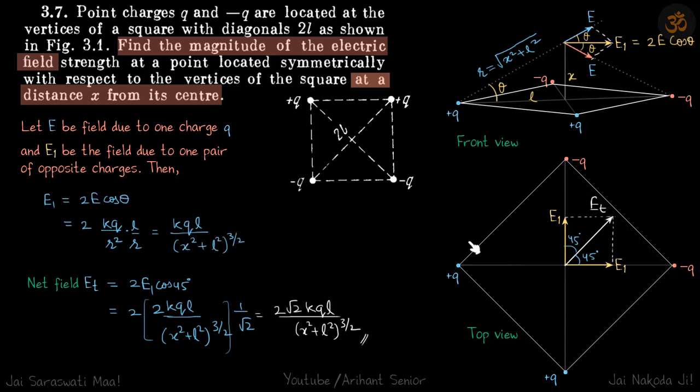This is the electric field E_net due to this pair of charges. Now if you look from the top, E_net will be along this diagonal just like this. The same E_net because of this pair of charges will be along this diagonal. The value of E_net will be the same.